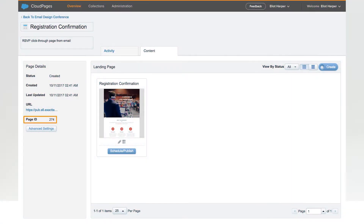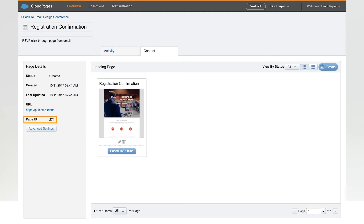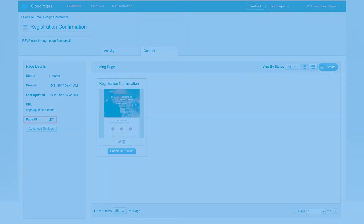You can obtain the identifier from page properties in the Cloud Pages collection. Optionally, you can also include one or more URL parameters. I'm including the first name field from my sendable data extension, which will be used to personalize the landing page.